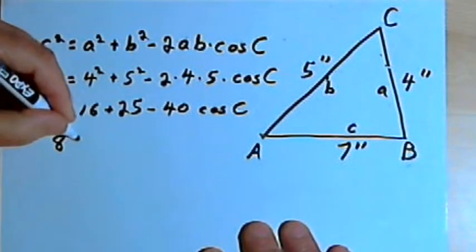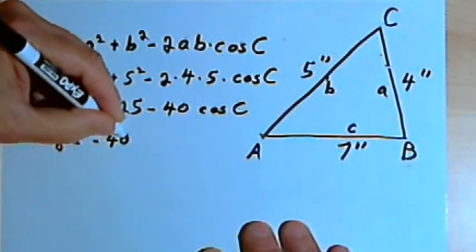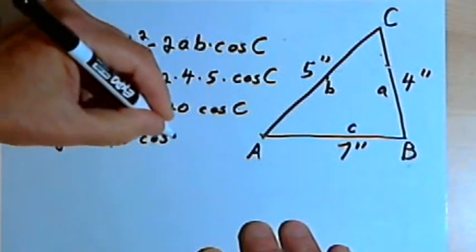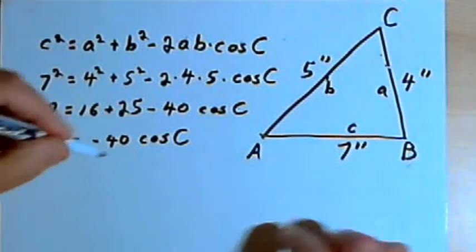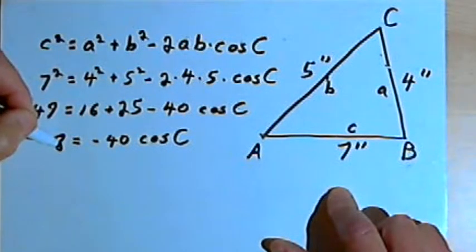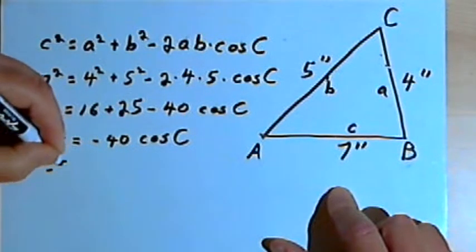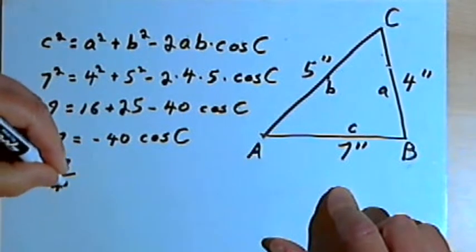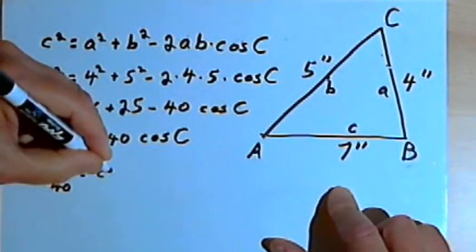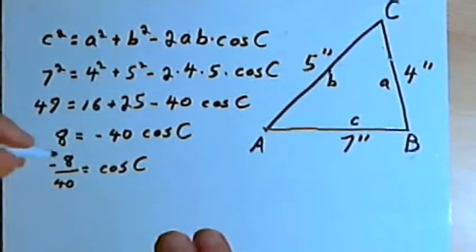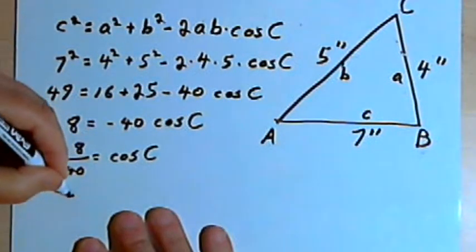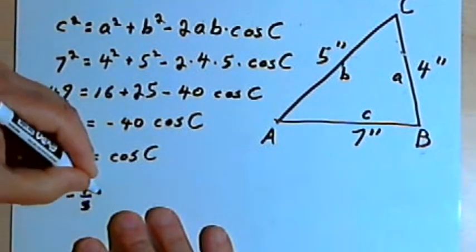So I've got 8 equals negative 40 times the cosine of c. I'll divide both sides by negative 40, so I get negative 8 over 40 equals the cosine of c. And I can reduce negative 8 over 40 down to negative 1 over 5.